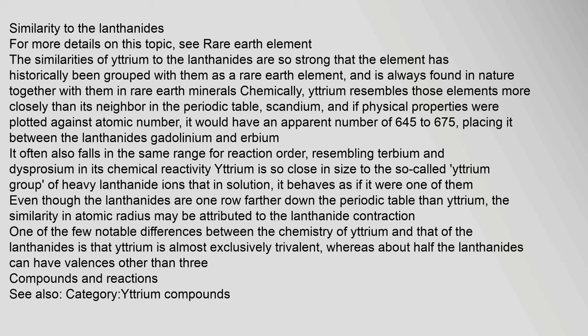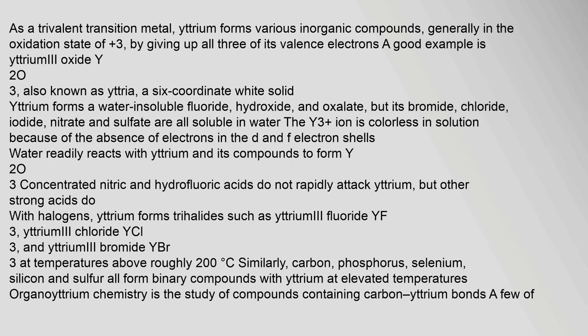One of the few notable differences between the chemistry of yttrium and that of the lanthanides is that yttrium is almost exclusively trivalent, whereas about half the lanthanides can have valences other than three. As a trivalent transition metal, yttrium forms various inorganic compounds, generally in the oxidation state +3 by giving up all three of its valence electrons. A good example is yttrium oxide Y2O3, also known as yttria.